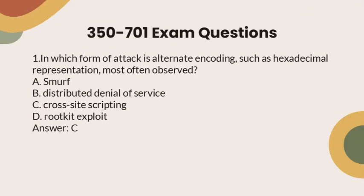Question 1: In which form of attack is alternate encoding, such as hexadecimal representation, most often observed? a. SMURF, b. Distributed Denial of Service, c. Cross-site Scripting, d. Rootkit Exploit. Answer: C.